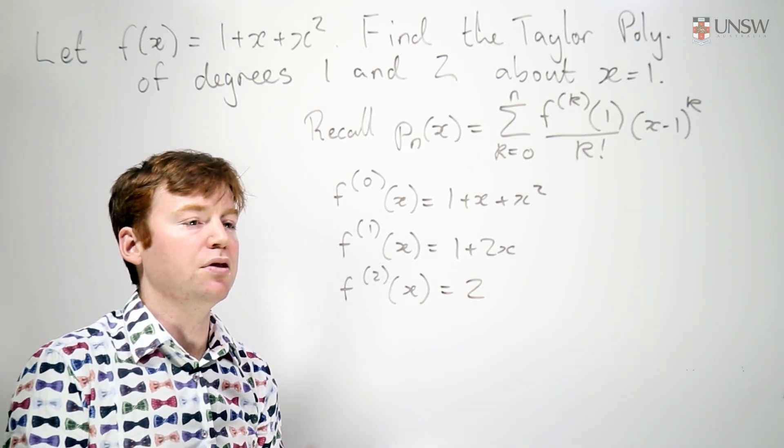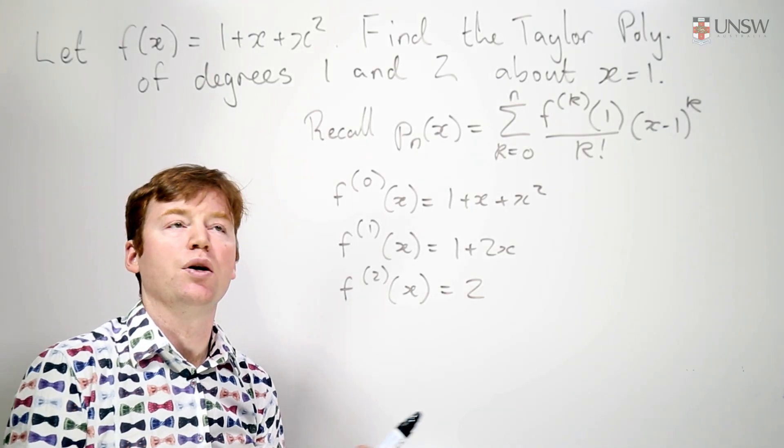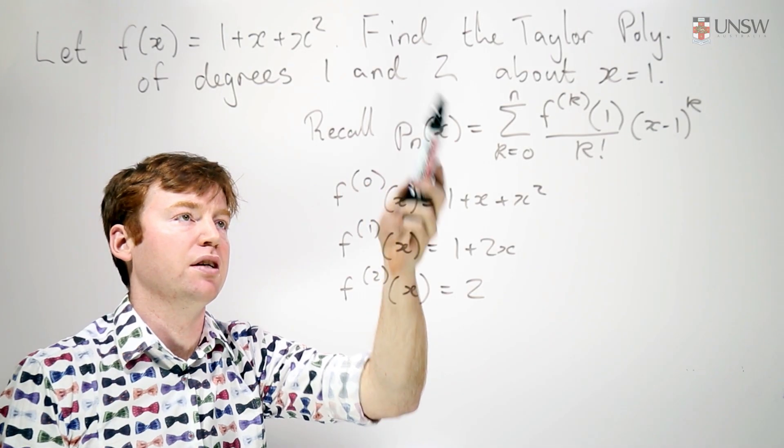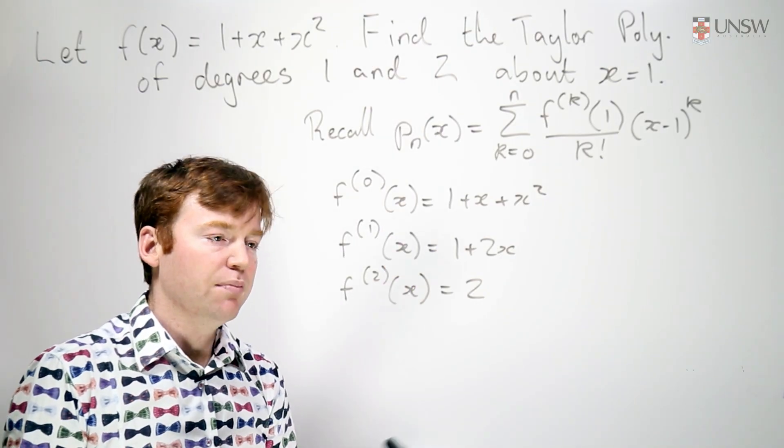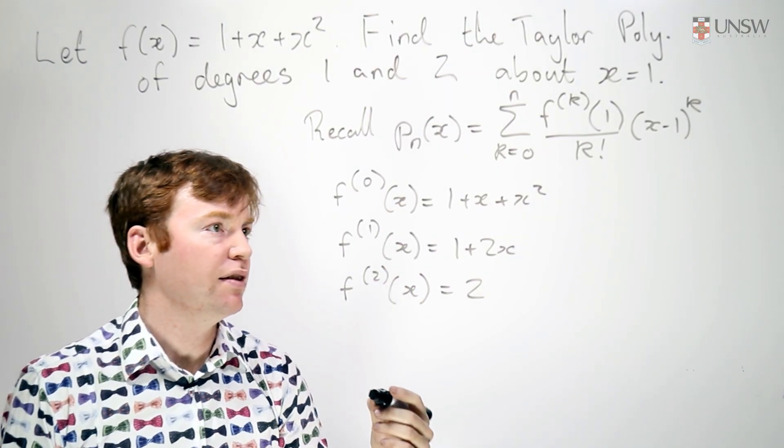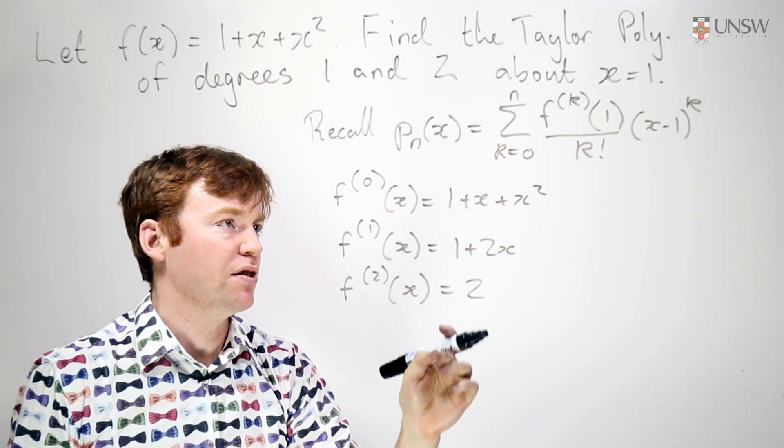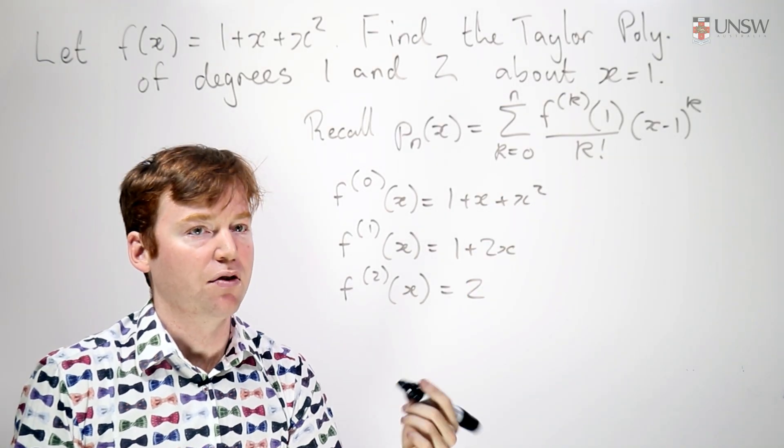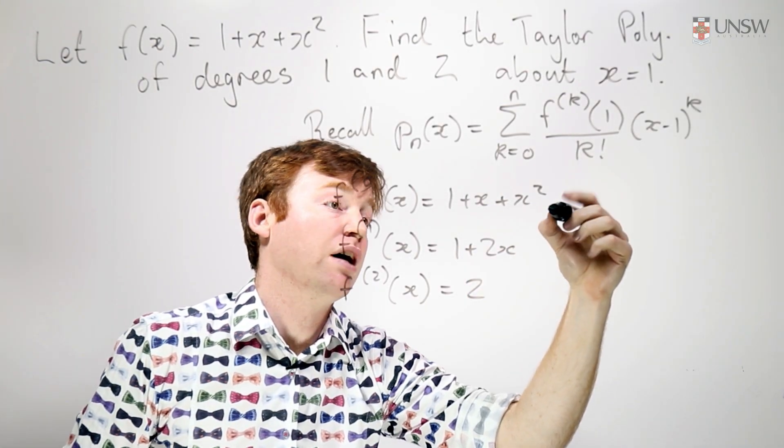So here are all the derivatives I'll need for a polynomial approximation of degrees 1 and 2. The polynomial approximation of degree 1 is just going to use the first two of these things evaluated at f of 1 or x equals 1.